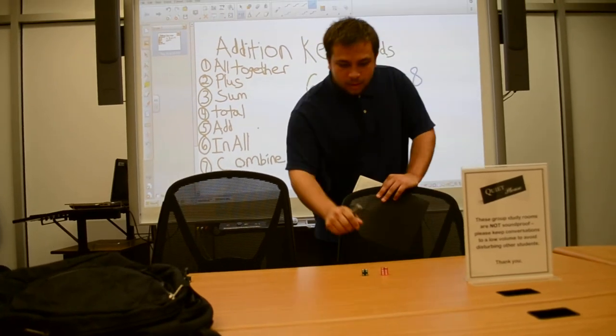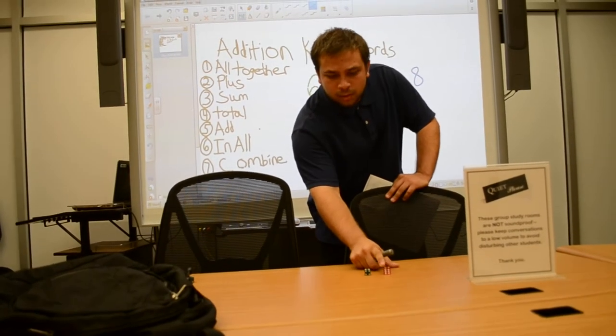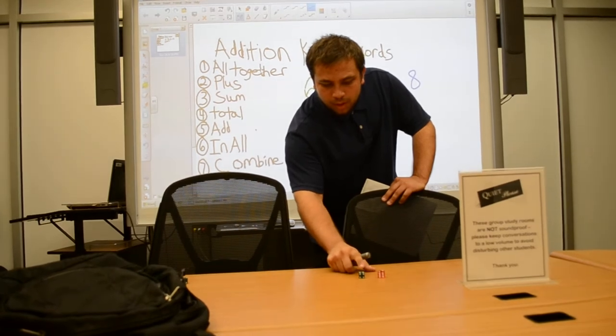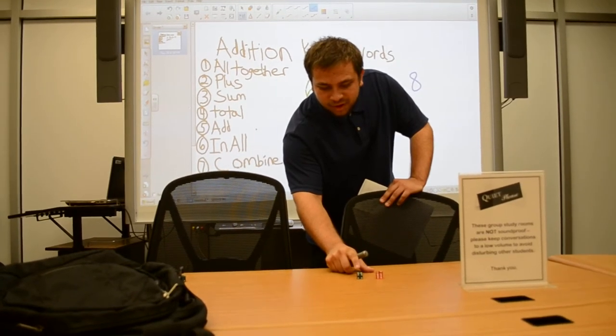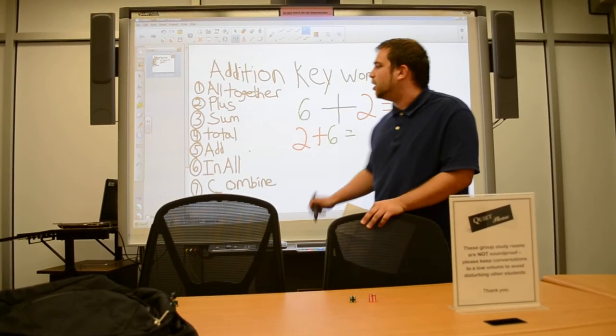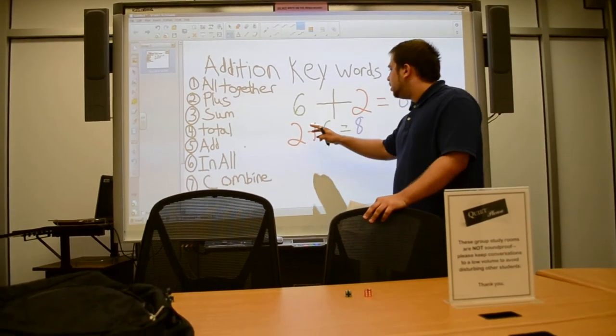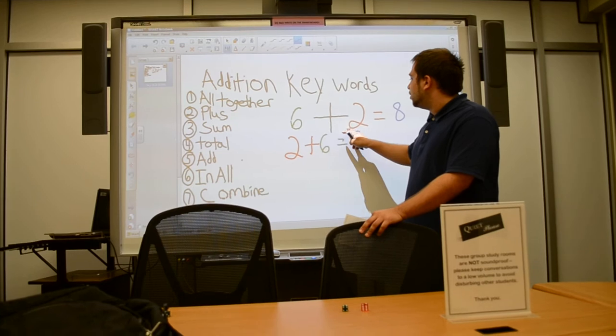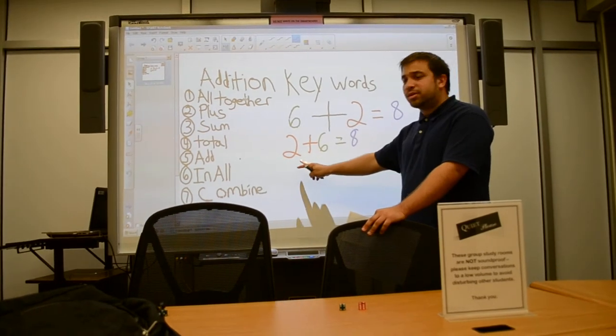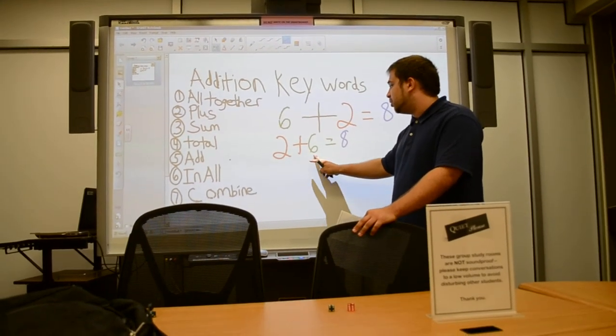Let's see. One, two, three, four, five, six, seven, eight. Either way, you did six plus two equals eight. And you reversed it and did two plus six equals eight.